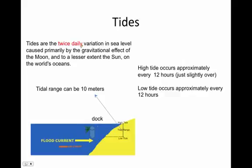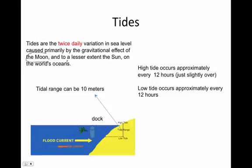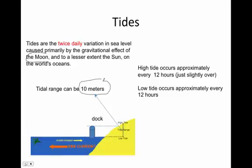Tides then are a twice-daily variation in the sea level caused primarily by the gravitational pull of the moon and to a lesser extent the sun on the world's oceans. In some cases, the tidal range, which is the difference between low tide and high tide, we call that the tidal range, can be as much as 10 meters or more in certain areas.